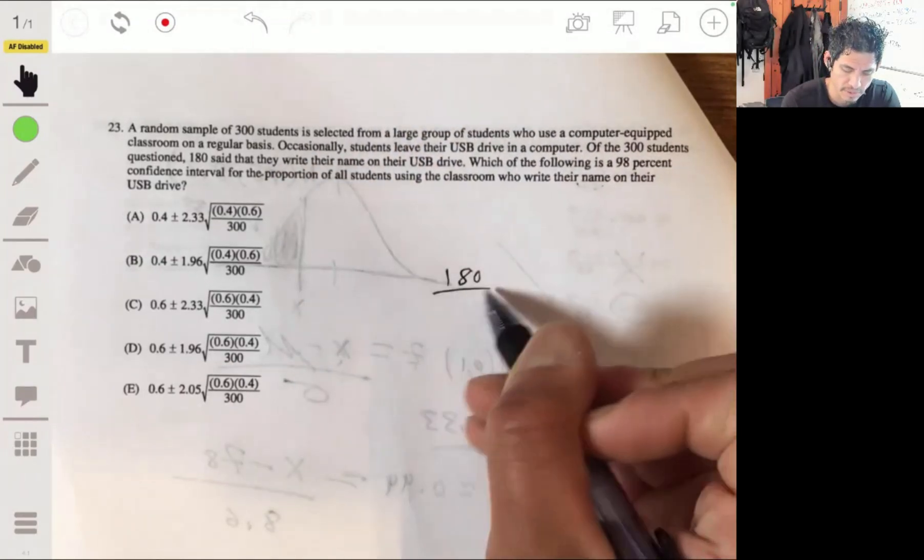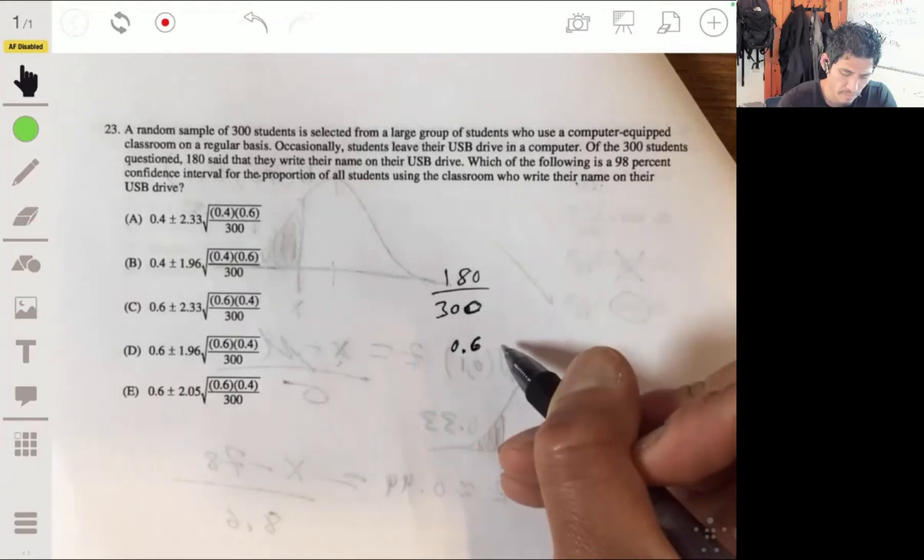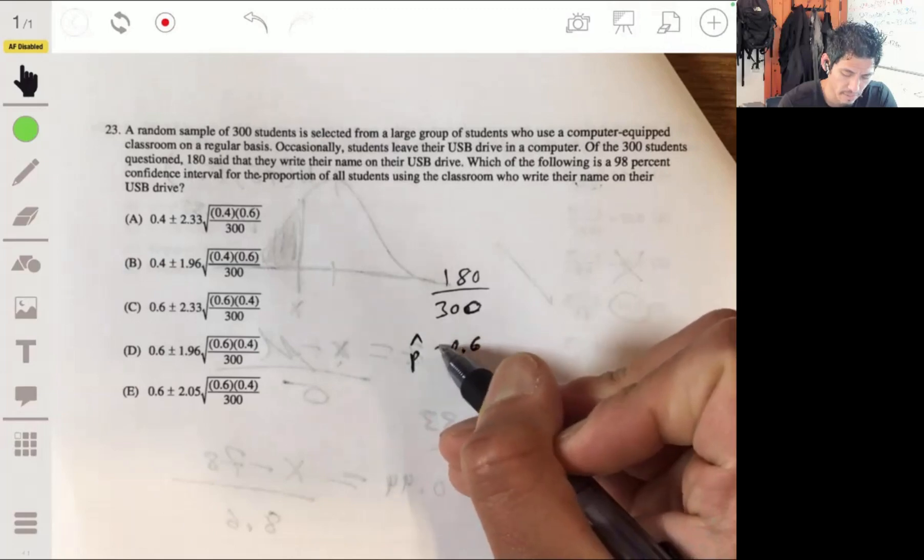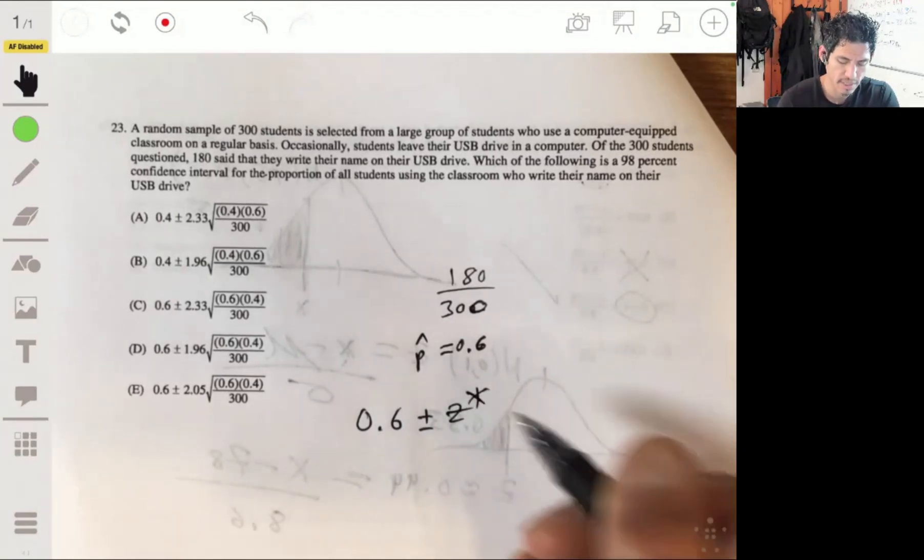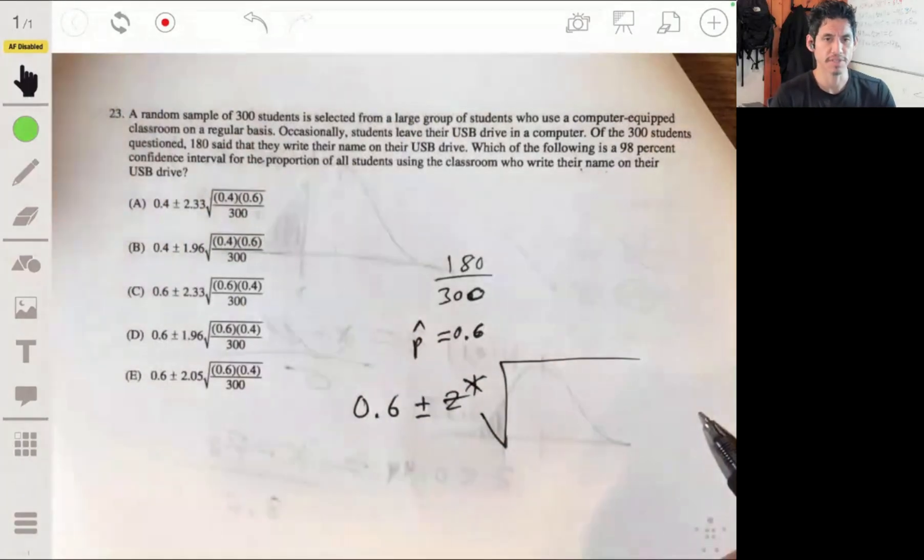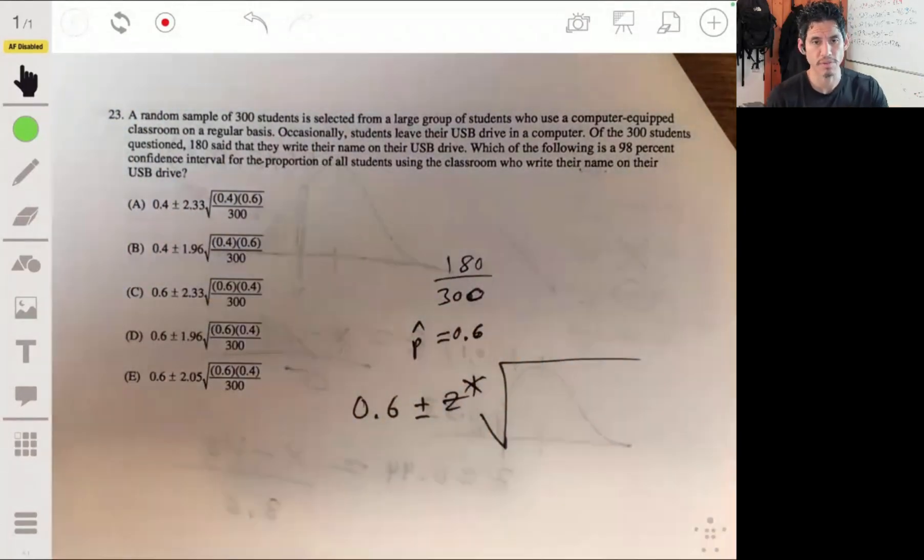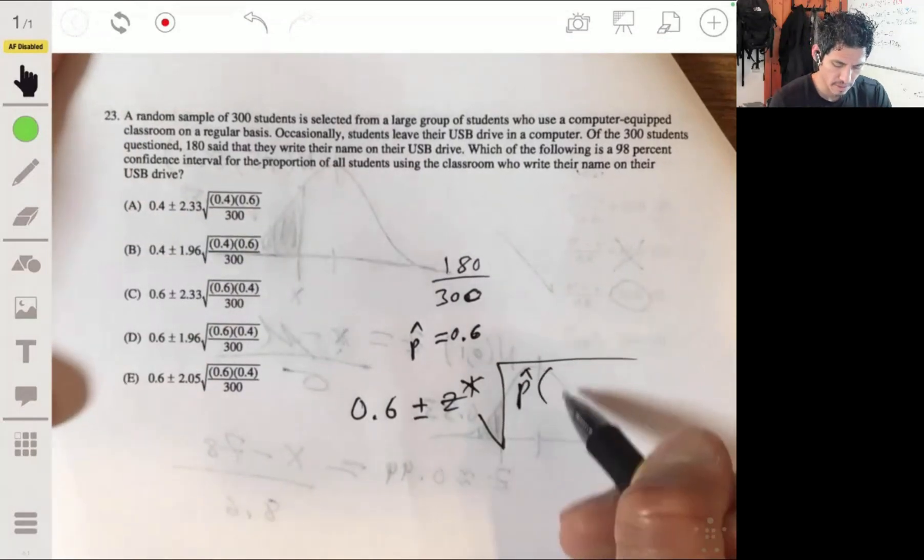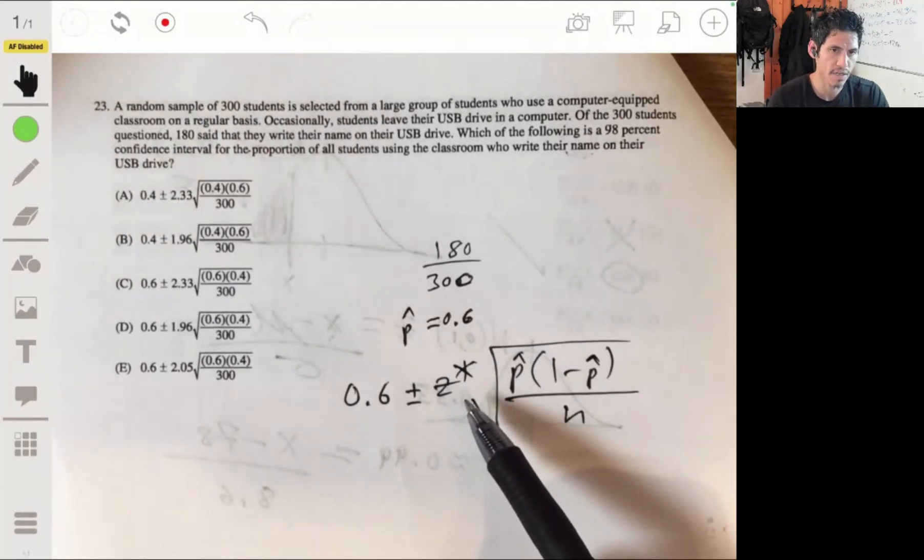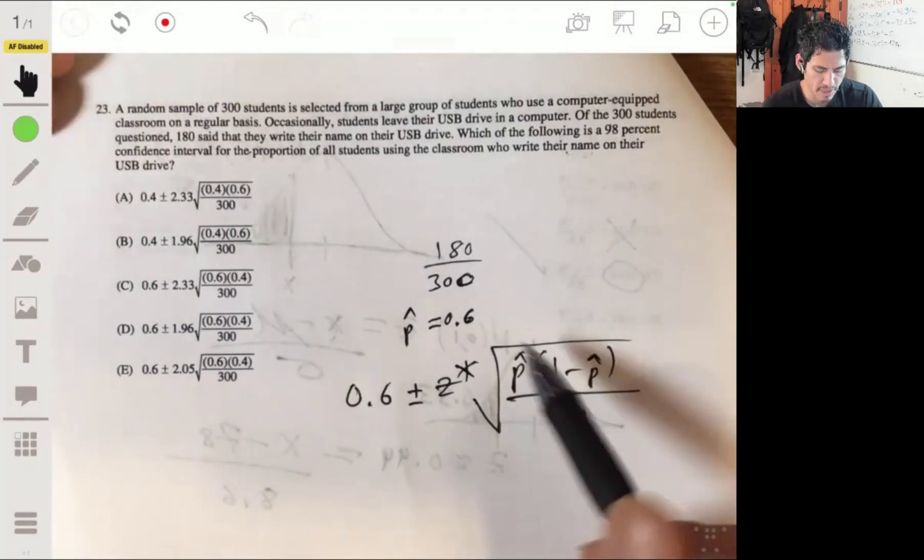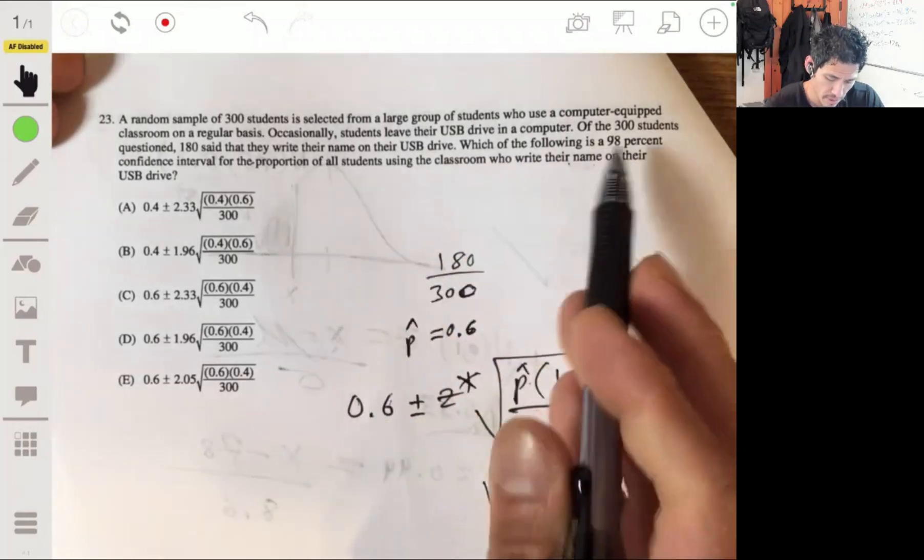So 180 out of the 300 is the proportion. That's going to be 0.6. That's your point estimate or your p-hat. So you're going to start at 0.6. And from there, you're going to add and subtract your critical value z-star times your standard deviation. This is where you're going to use the sample proportion: p-hat times 1 minus p-hat over n. So 0.6 times 0.4 over 300.